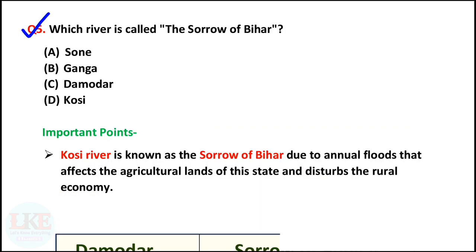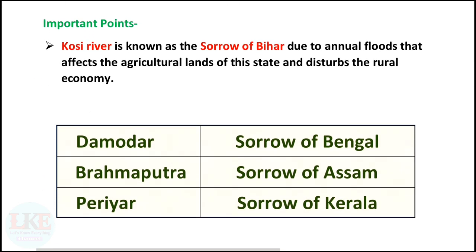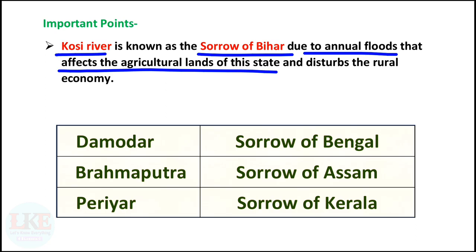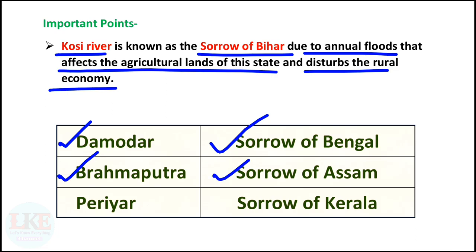Question number 5: which river is called the sorrow of Bihar? A. Son, B. Ganga, C. Damodar, D. Koshi. Right answer option D: Koshi. Koshi river is known as the sorrow of Bihar due to annual floods that affect the agricultural lands of the state and disturb the rural economy. Remember: Damodar river is called the sorrow of Bengal, Brahmaputra is the sorrow of Assam, and Periyar river is known as the sorrow of Kerala.